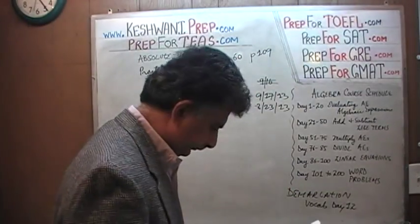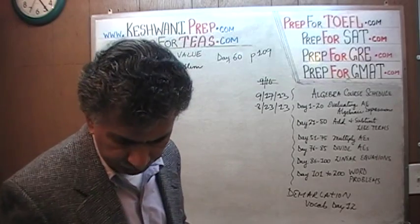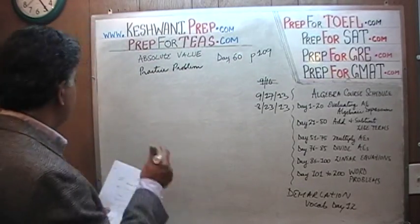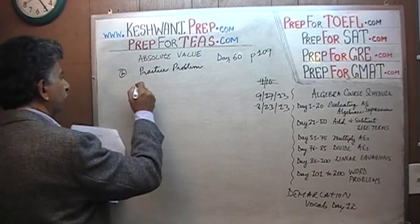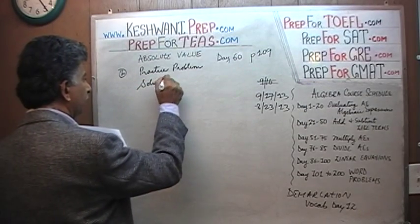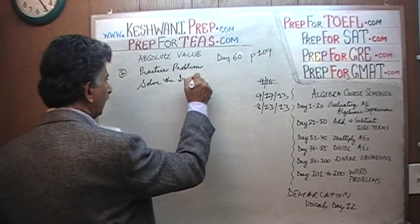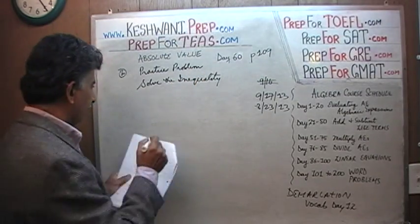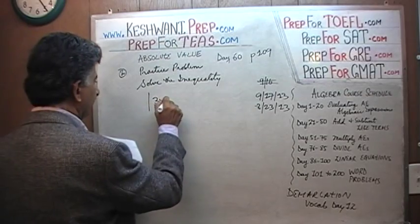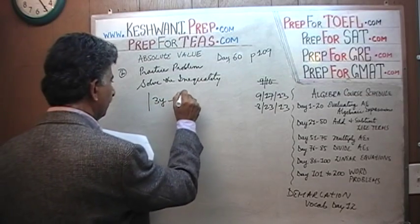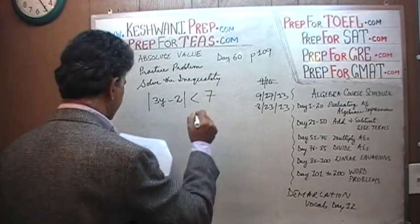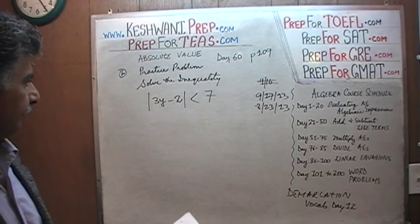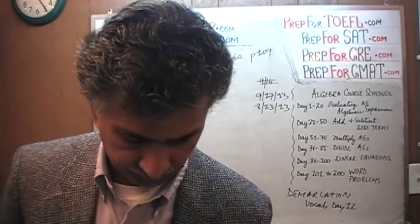The very last problem — it says 'solve the inequality.' It's practice problem number two, and the inequality given to us is: the absolute value of 3y minus 2 is less than 7. We are told |3y − 2| < 7. Let's see what we can do here.